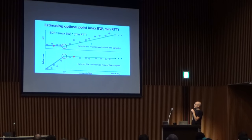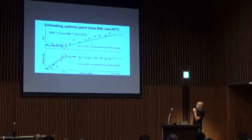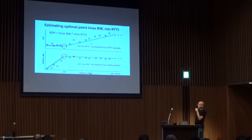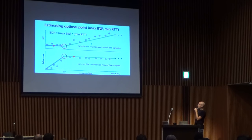One straightforward way to estimate these is using simple filtering. To find the two-way propagation delay, you get a bunch of round-trip time samples in the real world that are above the constraint line. A simple way to estimate propagation delay is to run a min filter over a recent window of samples. Correspondingly, to know the bandwidth, you look at delivery rate samples from acknowledgements and take a max filter windowed over some recent number of round-trip times to get a bandwidth estimate.